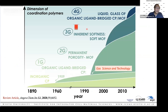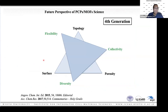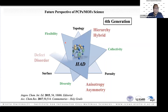Now let's move to the 4G system. The third-generation system has three attributes: flexibility, diversity of structure and electronic structure, and collectivity. Using these attributes, the fourth generation introduces new keywords: hierarchy, hybrid, anisotropy, asymmetry, defect, disorder — abbreviated HAD. Melting and missing defect disorder broadens PCP/MOF science. Downsizing leads to new properties, and hybridization of PCP/MOF with other materials creates new worlds.